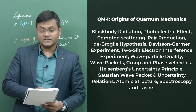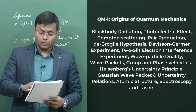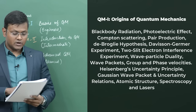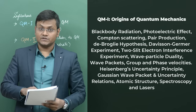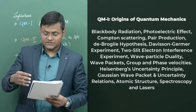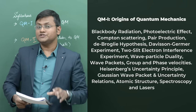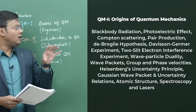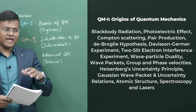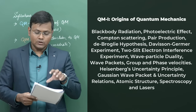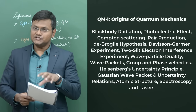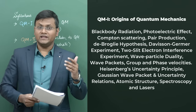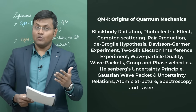We'll also cover the two-slit electron interference experiment, wave packets, group and phase velocities, uncertainty relations, atomic structure, spectroscopy, and lasers. This gives a brief overview of the origins of quantum mechanics. As I make these lecture videos, I'll go into quite a bit of detail on each topic, so every single topic may require more than one lecture to explain properly.